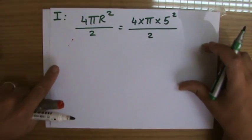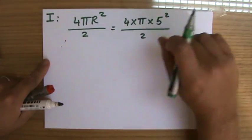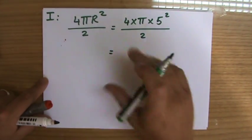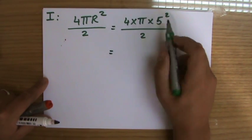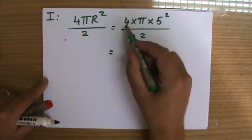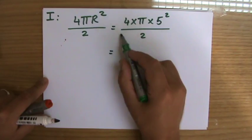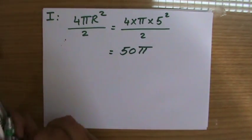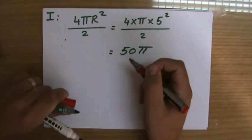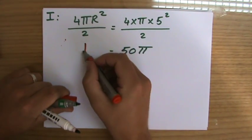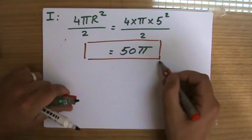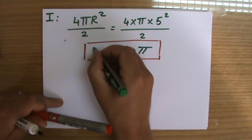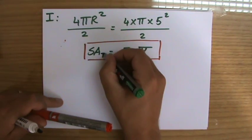So for the hemisphere it is 4 × π × 5² all divided by 2. I'm going to leave this in terms of pi and not multiply by π yet, because I'm not finished. This gives us 25 × 4 = 100, divided by 2 = 50π. That's the surface area of part 1 — 50π.